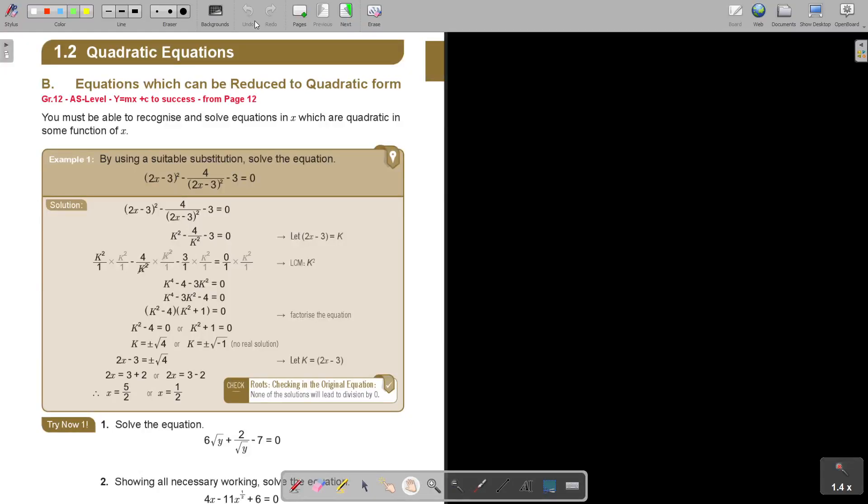A level. Equations, Expressions, Identities and Inequalities. Part 1. Let's start with quadratic equations and equations which can be reduced to quadratic form. Before I start, I just want to emphasize this. You can find this in the grade 12 A level Mathematics Textbook Y equals MX plus C and you can work through from page 12.